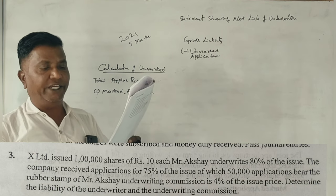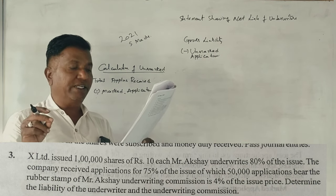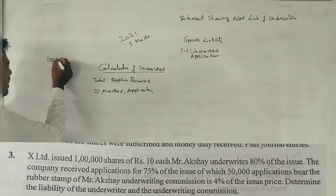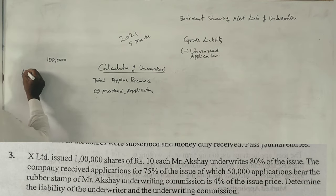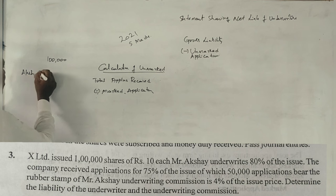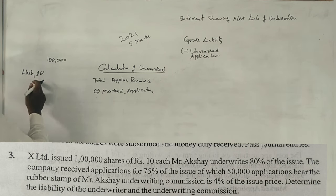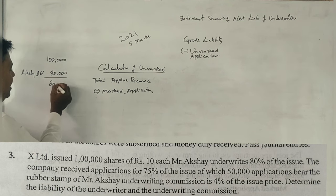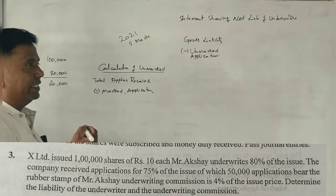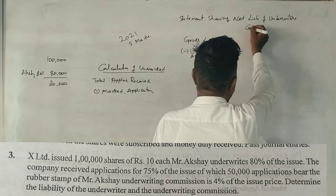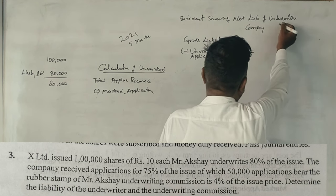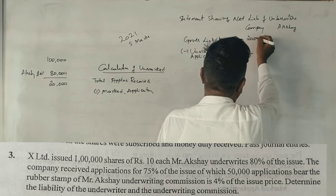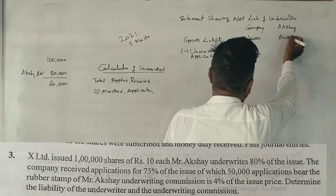Shares of rupees 10 each. Mr. Akshay underwrites 80% of the issue. X company issues 1 lakh shares. In this case, Akshay underwrites 80% — that is 80,000 shares — and the company retains 20,000 shares.